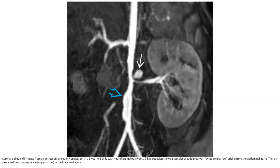MIP image from a contrast-enhanced MR angiogram in a five-year-old child with neurofibromatosis type 1 and hypertension shows a saccular aneurysm arising from the abdominal aorta. This also shows a fusiform aneurysm in the infrarenal aorta.